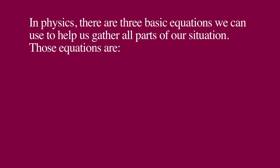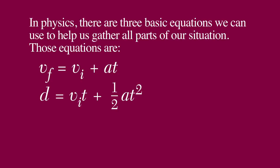In physics, there are three basic equations we can use to help us gather all parts of our situation. Those equations are: velocity final equals velocity initial plus acceleration times time; distance equals velocity initial times time plus one half acceleration times time squared; and velocity final squared equals velocity initial squared plus two times acceleration times distance.